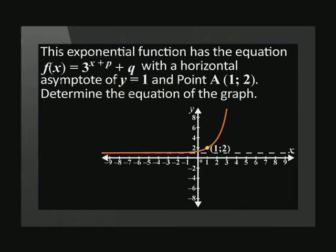This exponential function has the equation f of x equals 3 to the power of x plus p plus q, with a horizontal asymptote of y equals 1 and point a at (1, 2). Determine the equation of the graph.